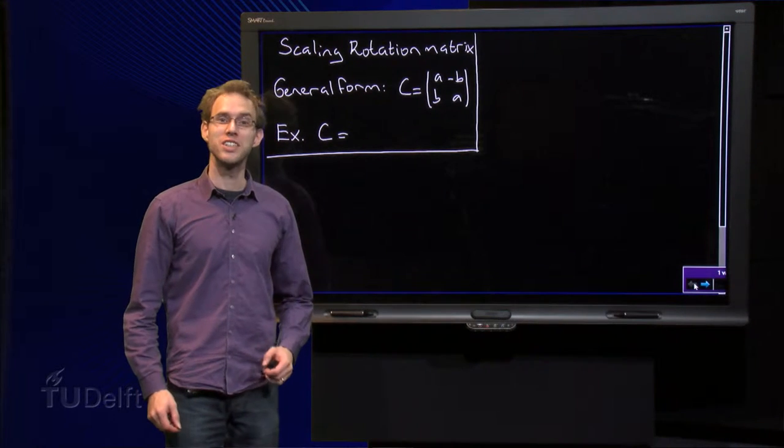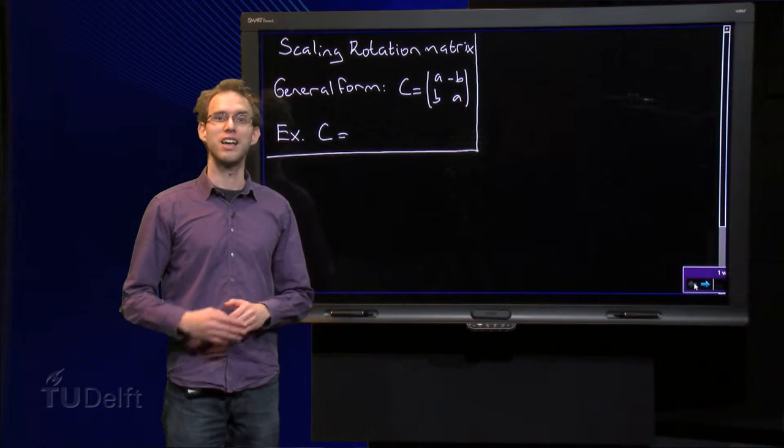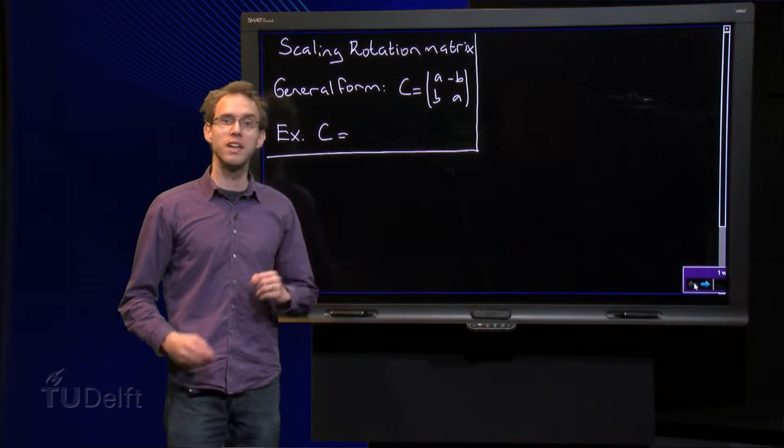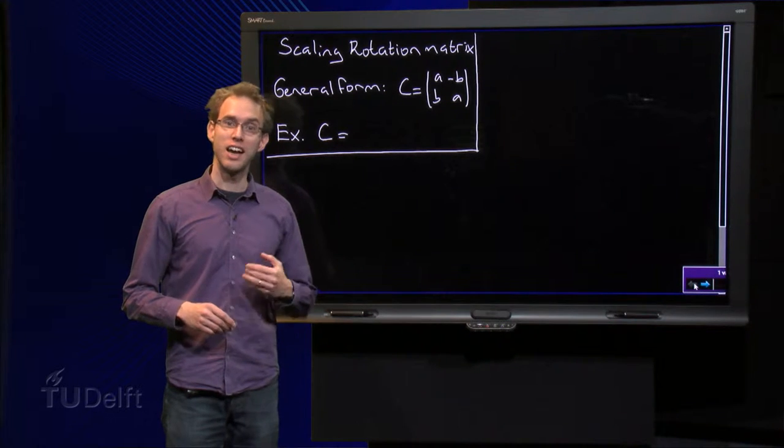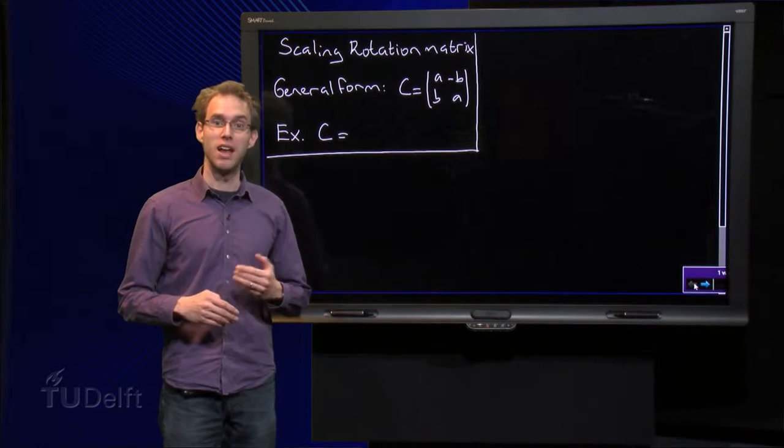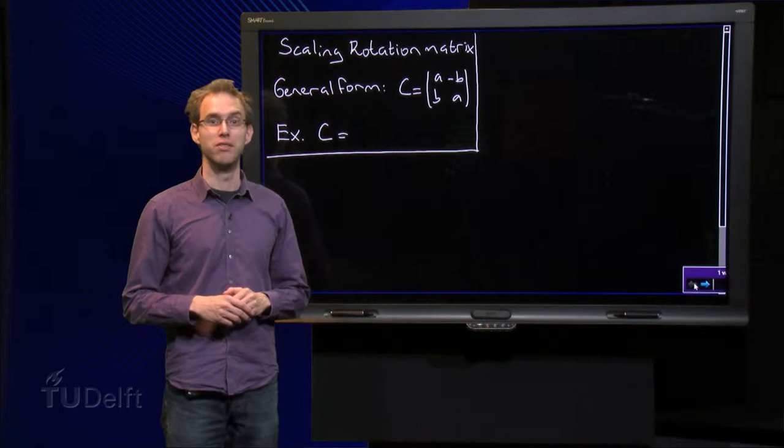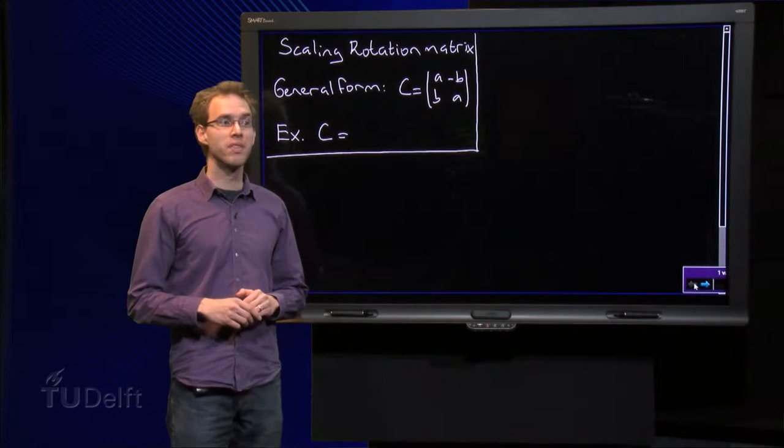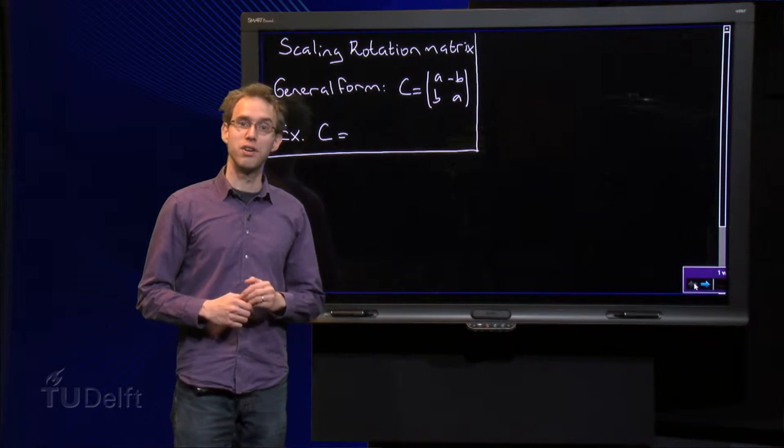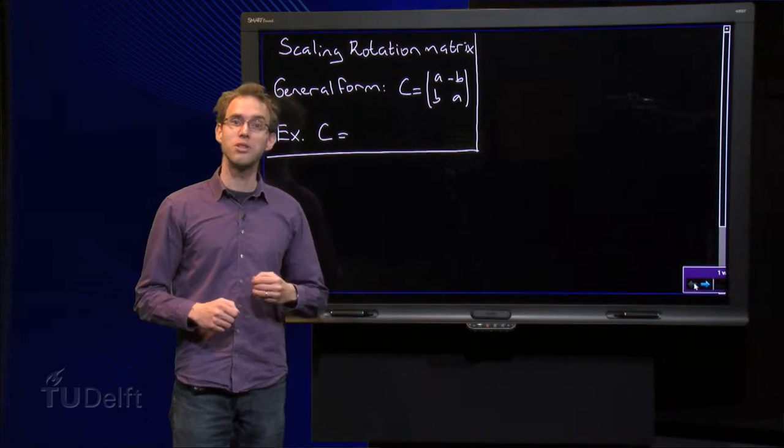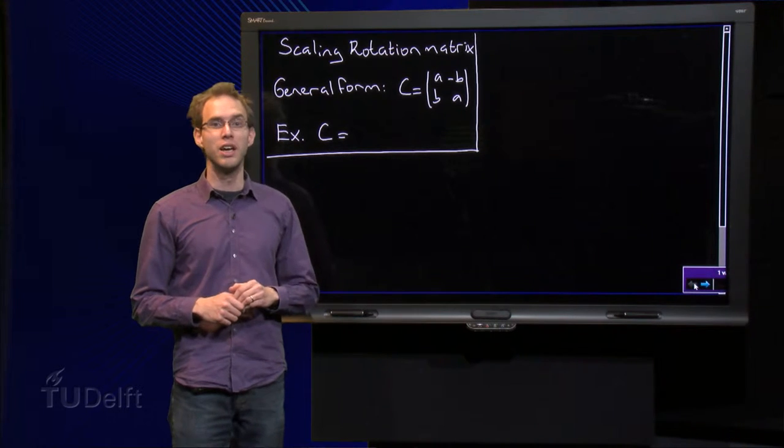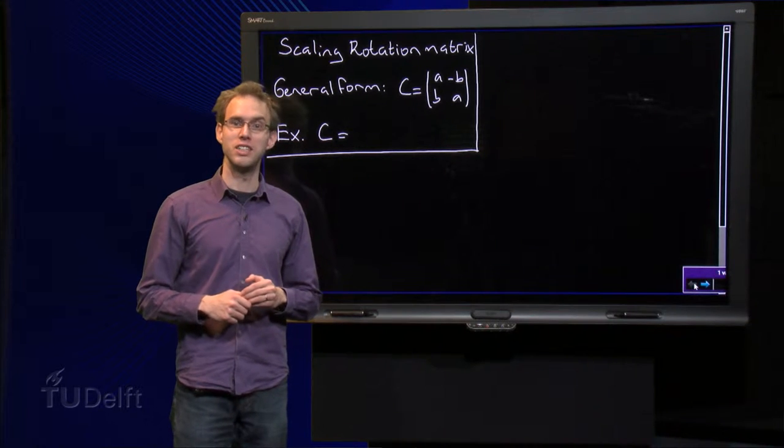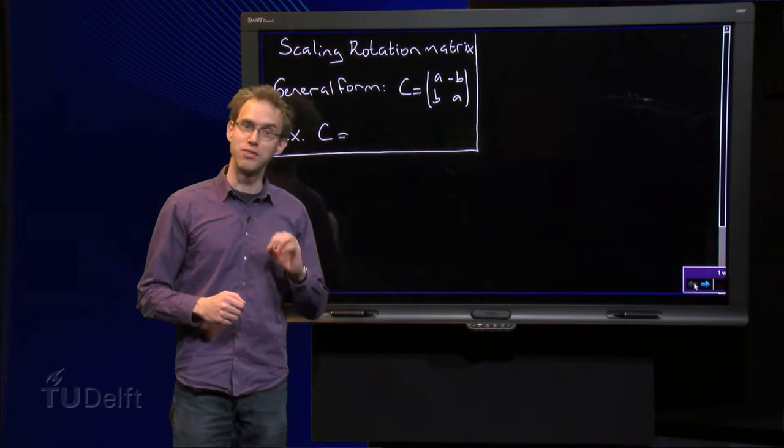We know how matrices with real eigenvalues act on vectors. Those matrices are stretching their eigenvectors by a factor of lambda, the corresponding eigenvalue. But what happens if the eigenvalues are complex? How does a matrix act in that case? In order to discover this, we will look at so-called scaling rotation matrices first in this video.